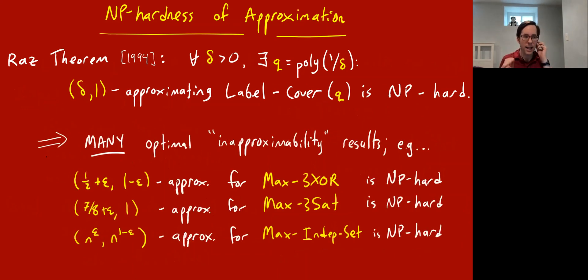That's Raz's theorem. This is the starting point for many optimal inapproximability results. This is Håstad's theorem. We already talked about it, but it's a reduction from Raz's theorem: that 3-XOR is hard to (1/2+ε, 1-ε)-approximate. Håstad also showed an even better result for max 3-SAT. It's known that even if I give you a perfectly satisfiable 3-SAT instance, it's NP-hard to find an assignment that satisfies more than 7/8 of the clauses. And that's tight because there is an efficient algorithm that satisfies 7/8 of the clauses.